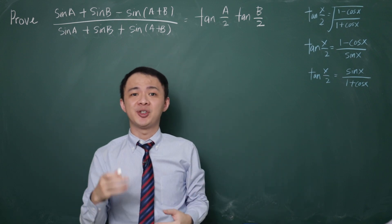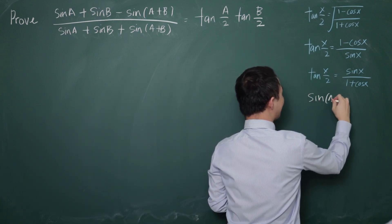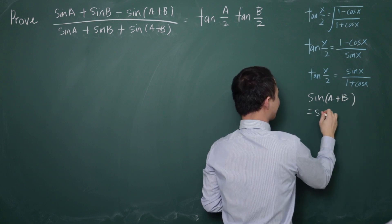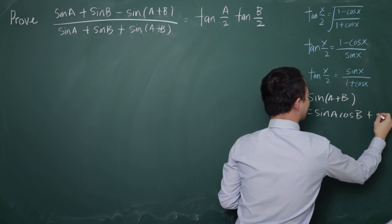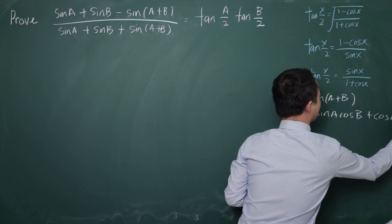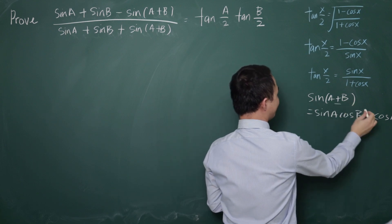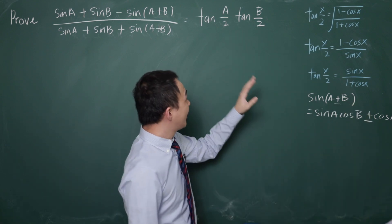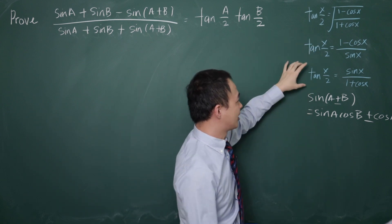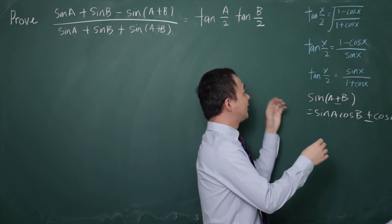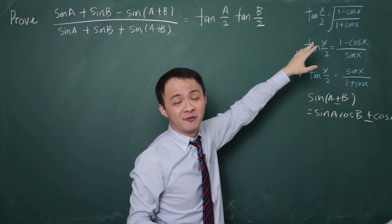I'll write one more formula here, which is the addition formula for sin(A+B). We know that sin(A+B) equals sin A cos B plus cos A sin B. This is the formula for sin(A+B); the same idea applies for minus — you just add a minus sign. For the tangent half-angle, there are basically three different types. In this question, we will only use the second and third types of the tangent half-angle formula — we're not going to use the first one.